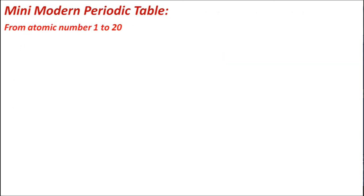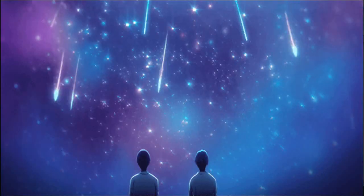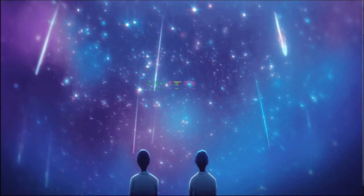A mini periodic table covers atomic numbers 1 to 20, the first 20 elements. In the next video, we will describe how atomic size varies in groups and periods, how reactivity of elements varies in groups and periods, and other different properties marked in groups and periods.